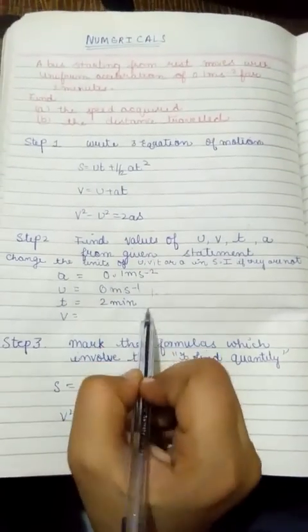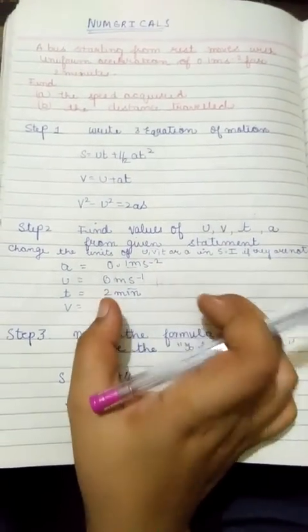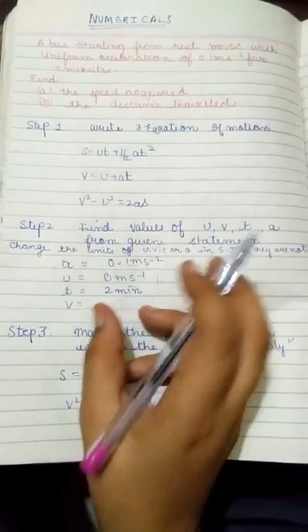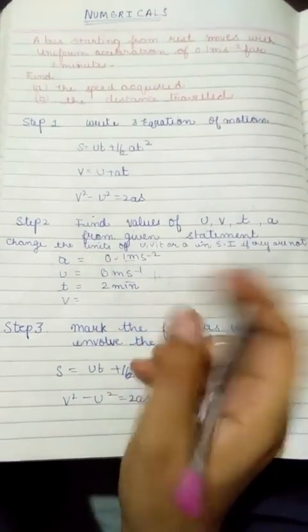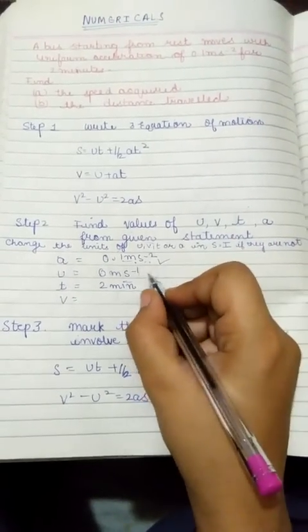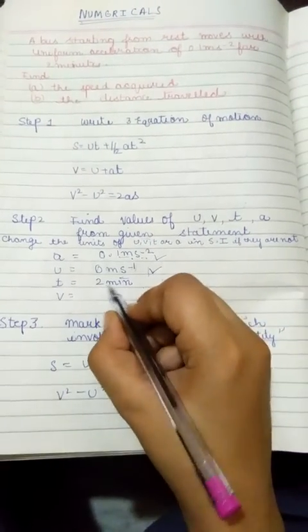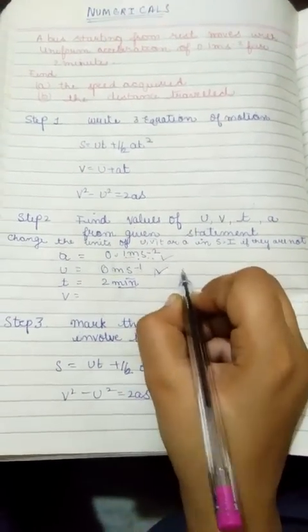Now, check all the units of these quantities. Are they in SI? If they are not, change them into SI. Meter per second is in SI. But here, minute is not in SI.